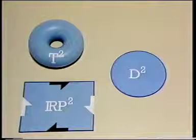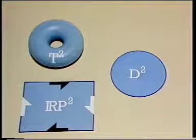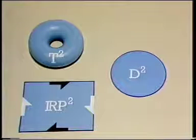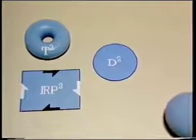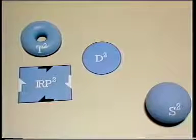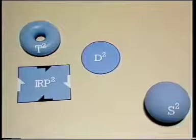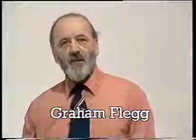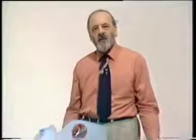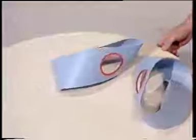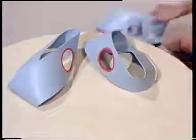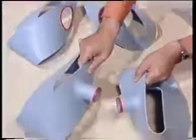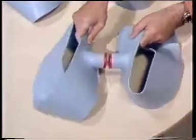It turns out that every possible surface can be constructed geometrically out of these three plus one extra surface, the sphere. The method of construction is one you met in an earlier program. Remember, we took two Möbius bands, cut a disk out of each, then pushed out the edges of the holes towards each other and glued them together.